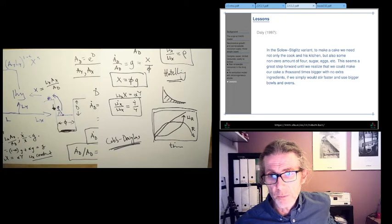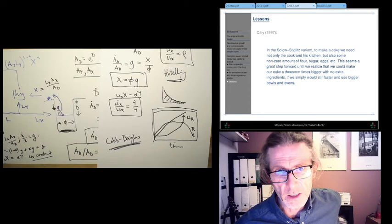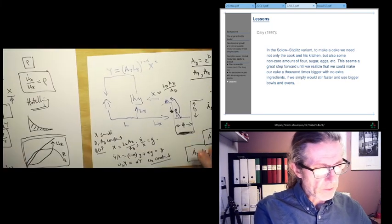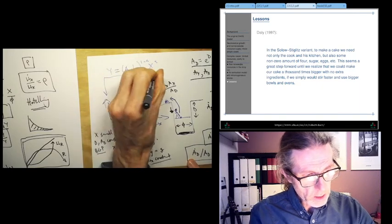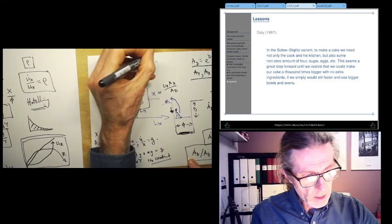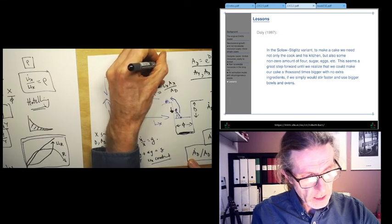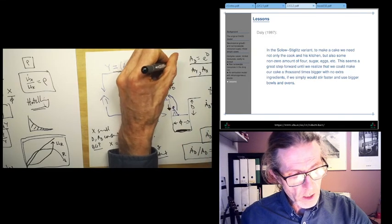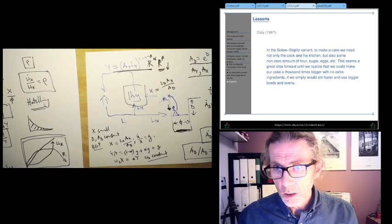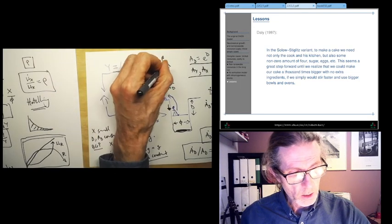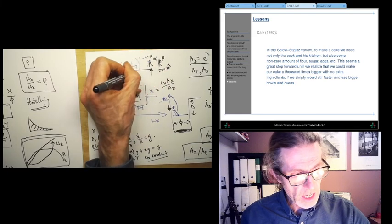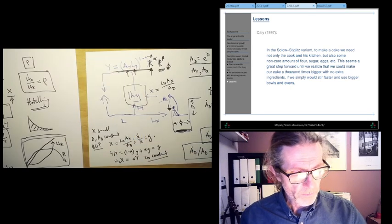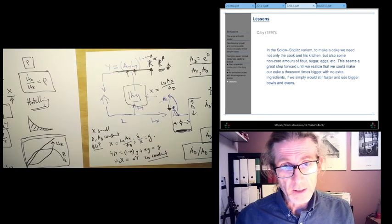This seems like a great step forward until we realize that we could make our cake a thousand times bigger with no extra ingredients if we would simply stir faster and use bigger bowls and ovens. So what is Daly saying here? He's looking at this Cobb-Douglas function. There's capital in there too, so this is like one minus alpha minus beta K to the alpha R to the beta. He's saying if R goes down, we can make a thousand times more product Y with the same R if we just raise K and L.